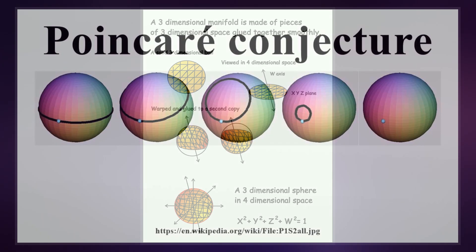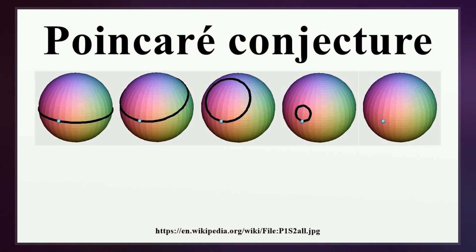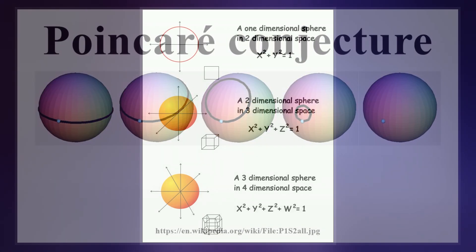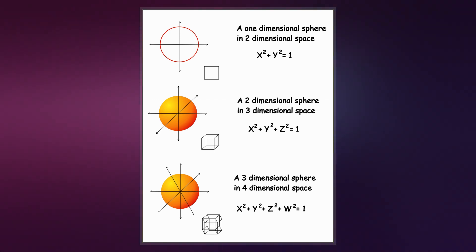The Poincare conjecture claims that if such a space has the additional property that each loop in the space can be continuously tightened to a point, then it is necessarily a three-dimensional sphere.